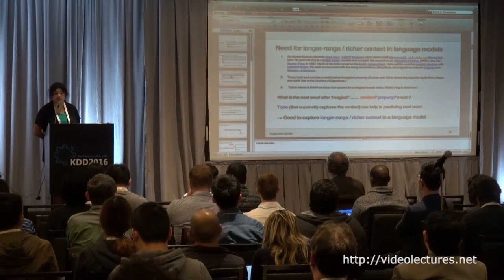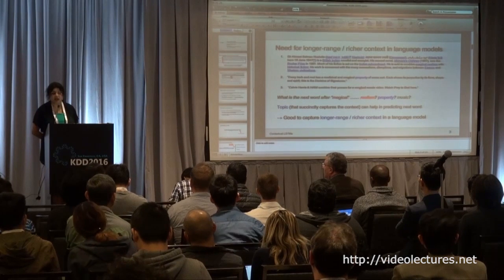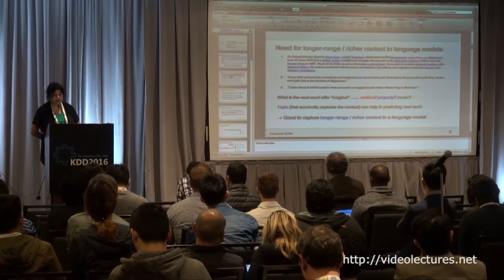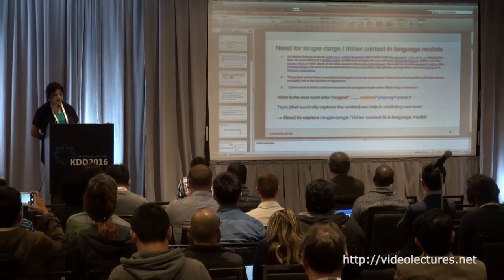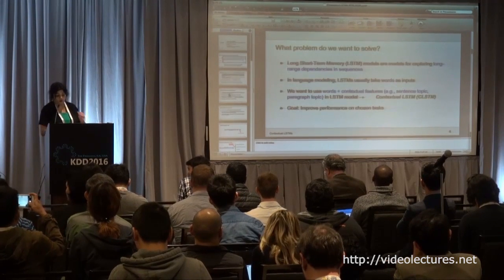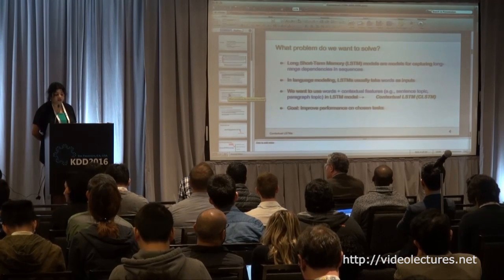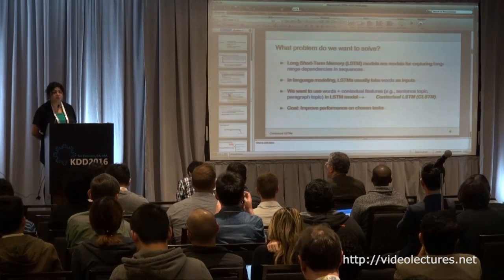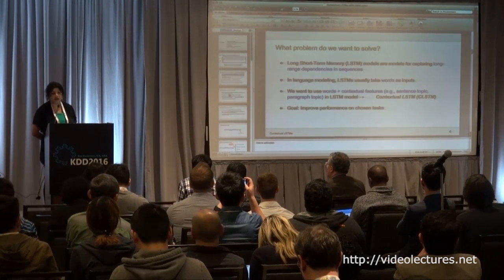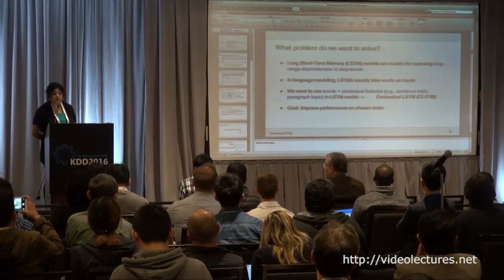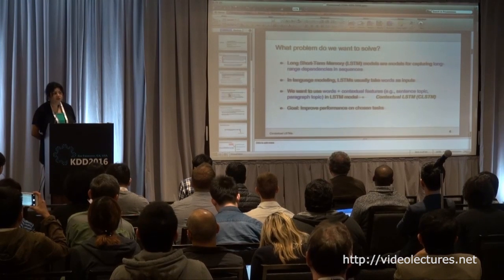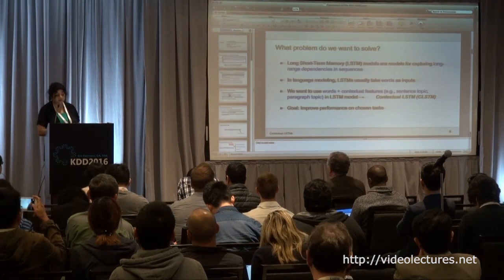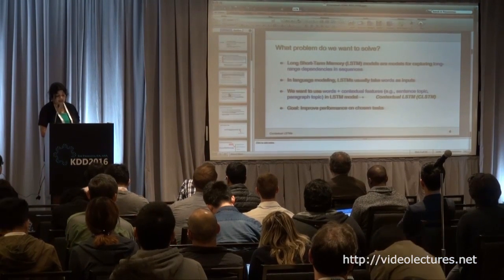There are various ways of capturing context, and one way we thought we could do it is through topics. The idea was to capture long-range, richer context in a language model. We are looking at long short-term memory or LSTM models, which have shown strong performance in complex domains like speech and vision. We were trying to make use of LSTMs in the text domain, and introduced a new model called contextual LSTMs.